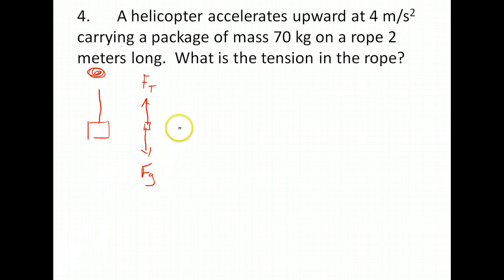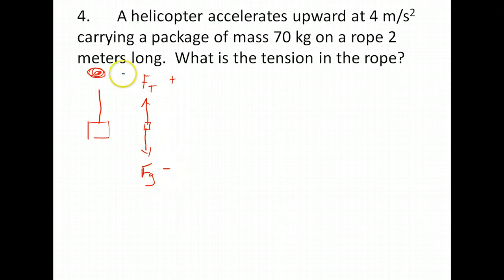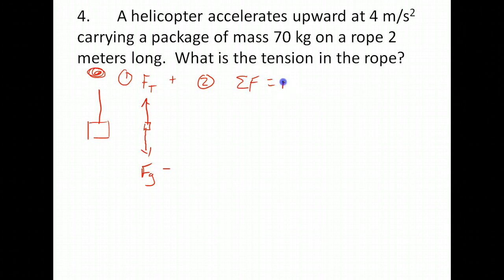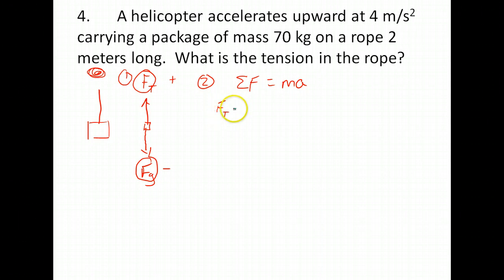We know this object is accelerating in an upward direction. A lot of times the problem will indicate what direction is positive. Since it's accelerating upward, we'll say upward is positive and downward is negative. With the free body diagram drawn, the second step is Newton's second law: the net force, or sum of all forces on the object, equals mass times acceleration. We have tension as positive and gravity as negative, so: tension minus gravity equals mass times acceleration.